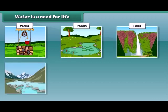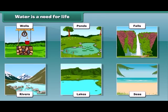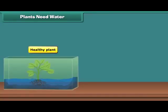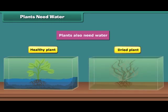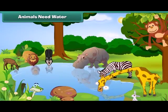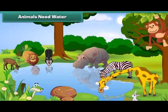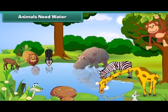Water is essential for the existence of living beings. We find water in wells, ponds, falls, rivers, lakes and seas. Not only animals but plants also need water for survival; otherwise, they will dry up. Do you know that animals also feel thirsty like us? Without water, they also cannot live.